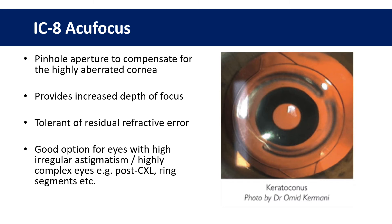In cases where you might have wanted to implant a toric lens, the IC8 from AccuFocus is a relatively new option that may be very effective, particularly in eyes with significant irregular astigmatism. This lens consists of a pinhole aperture and is used in the same way as a simple monofocal lens. The advantage is that it compensates for the highly aberrated cornea by blocking out a lot of light coming from the periphery, increases depth of focus, and is tolerant of residual refractive error.